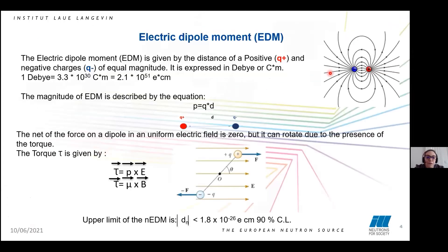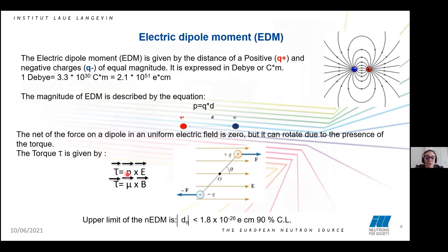The electric dipole moment is given by the distance between a positive and a negative charge, and the magnitude of the electric dipole moment is described by this equation, where P is equal to Q — that is the charge — and D, that is the distance. The net force of a dipole in a uniform electric field, as shown here, is zero, but it can undergo a torque, and the torque can be described by P times E.